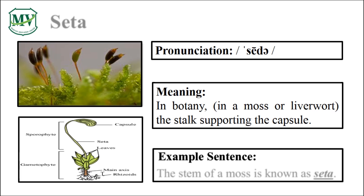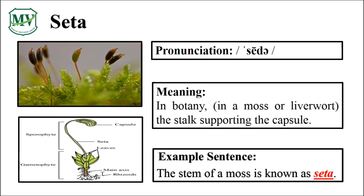Please repeat the word after me. S-E-T-A. Good job! Let's spell it. S-E-T-A. Great! The stem of a moss is known as seta. Can you try reading the sentence on your own? Seta. Great!